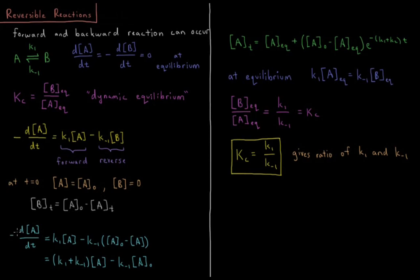Now we have minus dA/dt equals K1 times A minus K-1 times the concentration of A. Factoring things out, this equals K1 plus K-1 times the concentration of A, minus K-1 times the initial concentration of A.